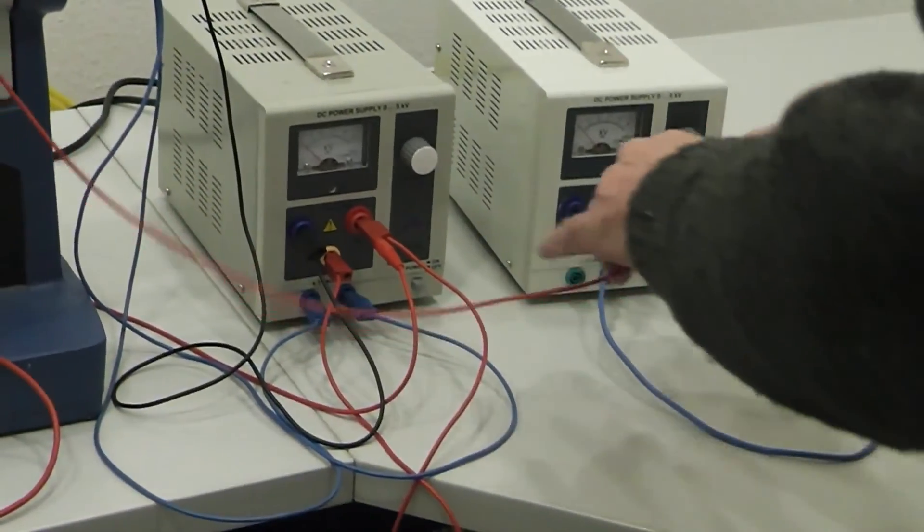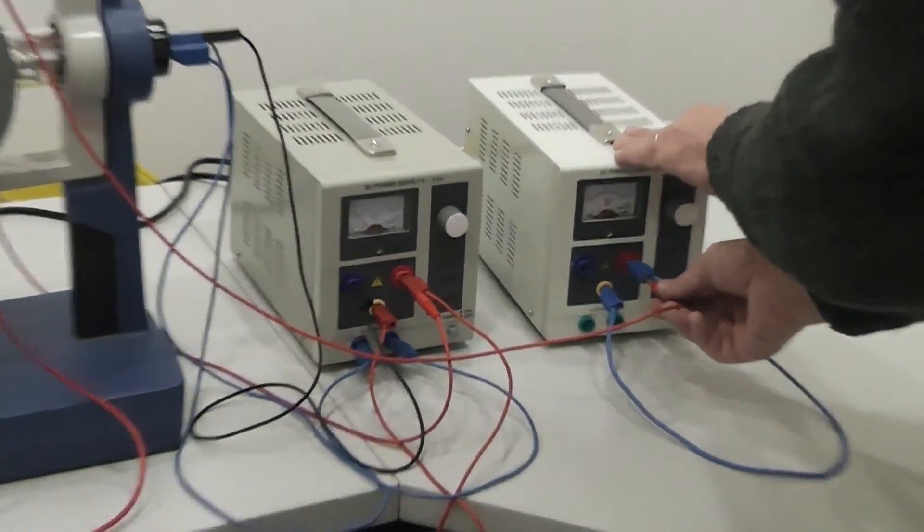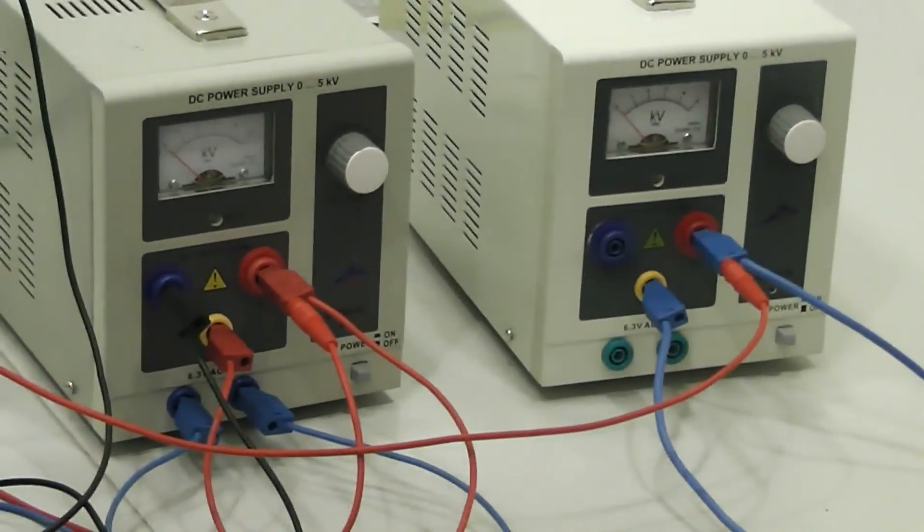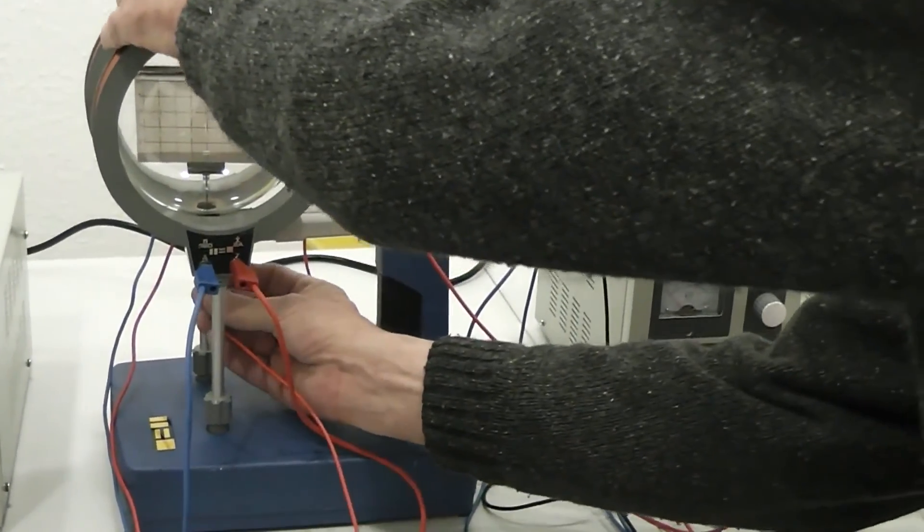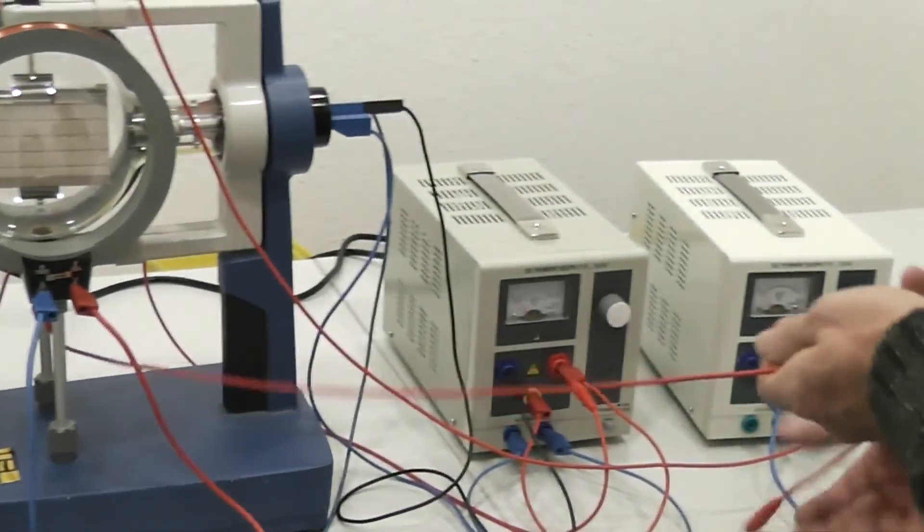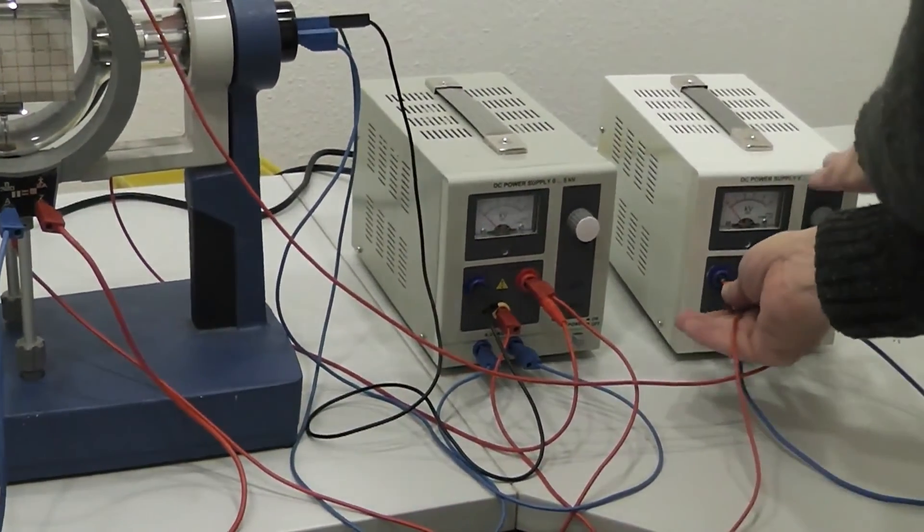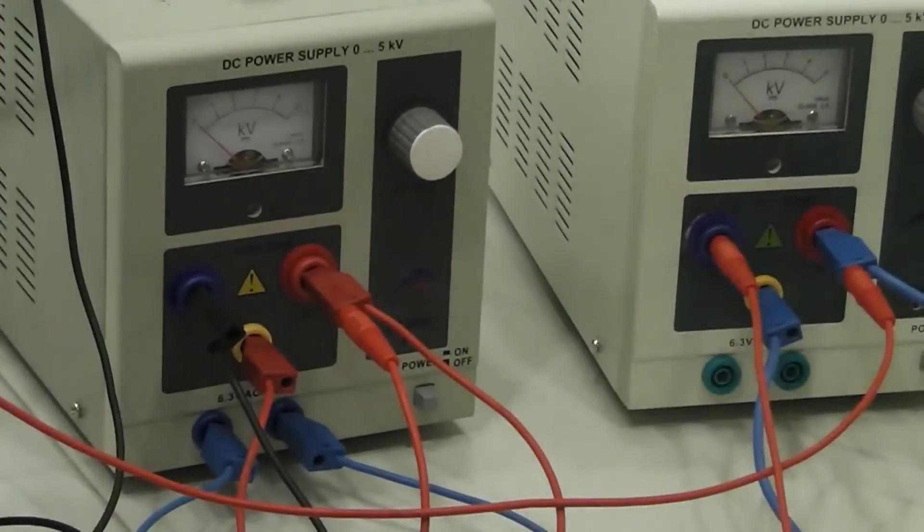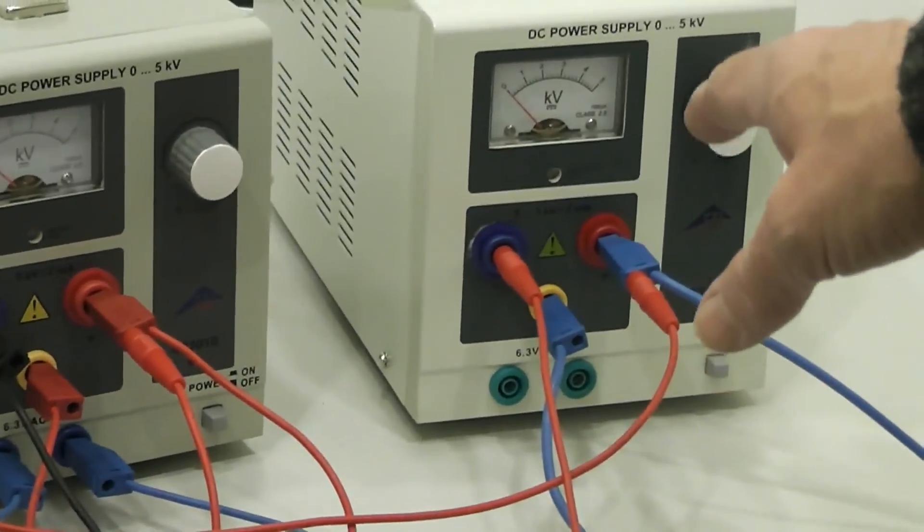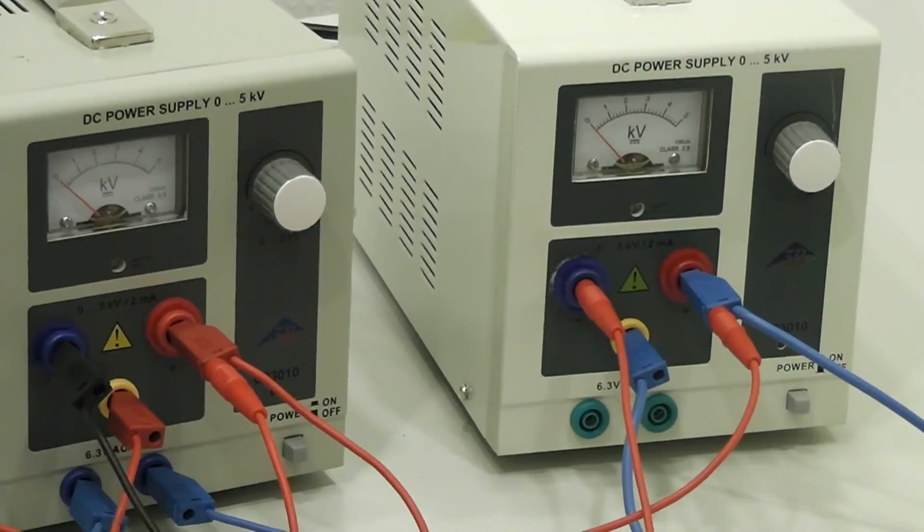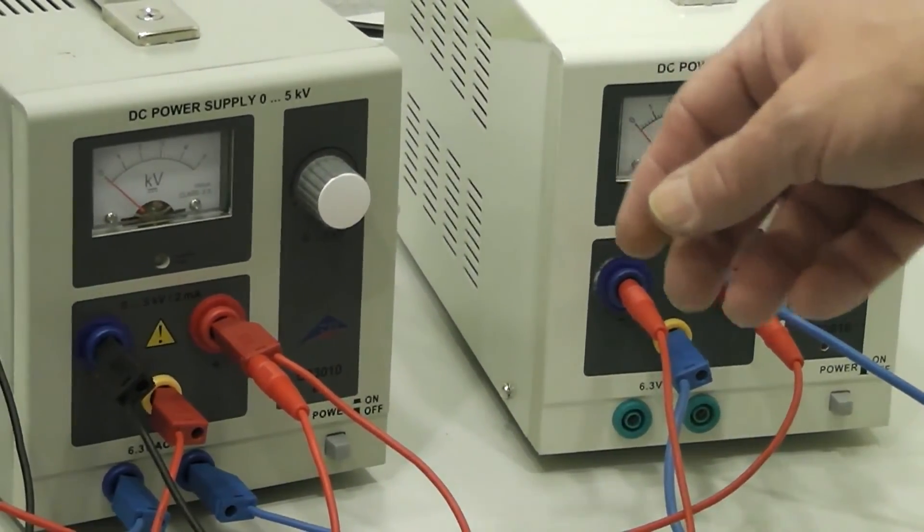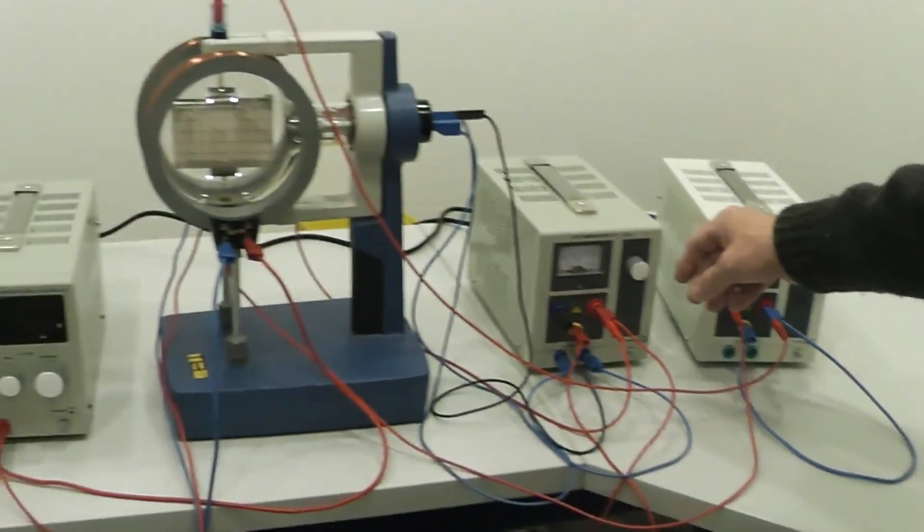And you connect it to the plus, and the lower one to minus, which you can switch around if you want deflection up or down. It depends how the polarity is. And we can show you. Please switch off the light. I turn on the power supplies again.